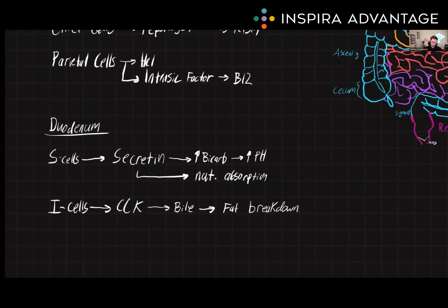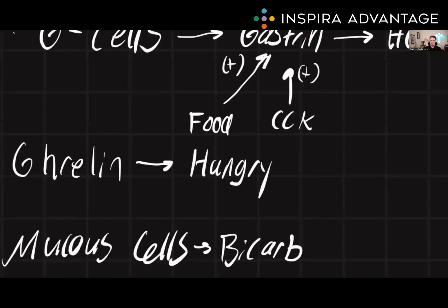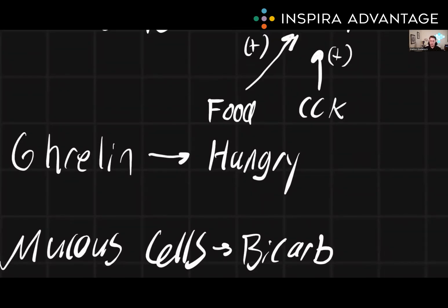Finally, we have ghrelin. Ghrelin is a hormone that is produced by the stomach and regulates appetite, makes us hungry. Ghrelin levels increase when the stomach is empty and decrease when the stomach is full. This signals to the brain that it's time to initiate eating.